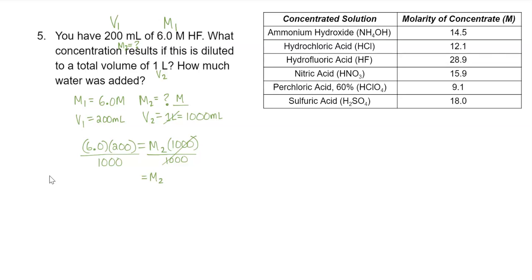When I solved that, I got 1.2, and our units are molarity — 1.2 molar. That is our final answer for what concentration results if this is diluted to a total volume of one liter. The concentration that results is 1.2 molar.